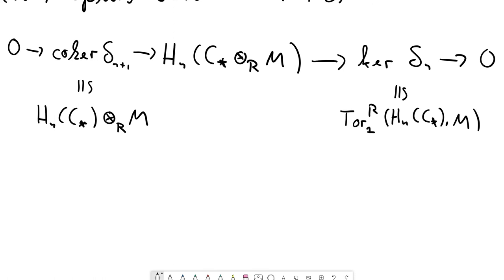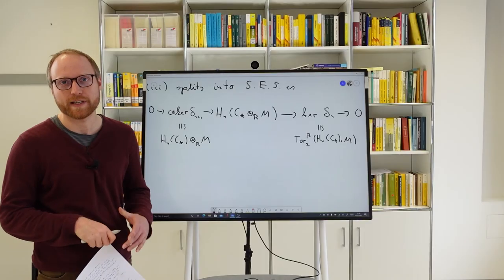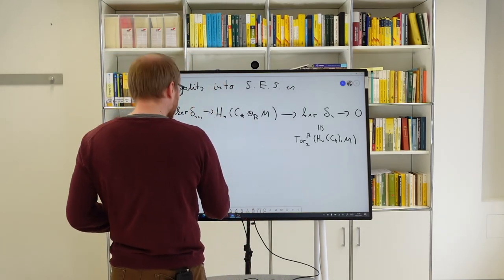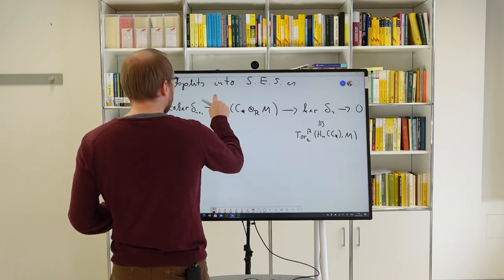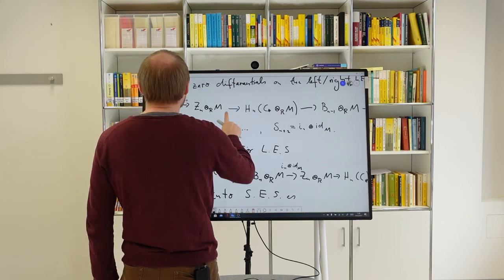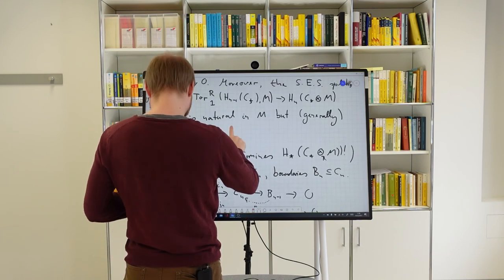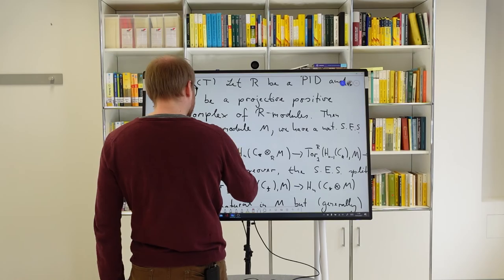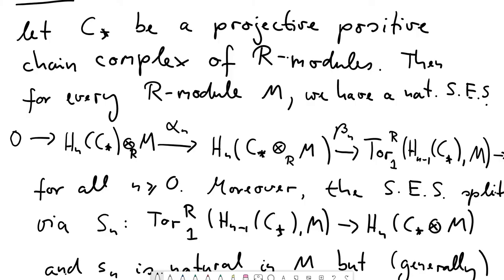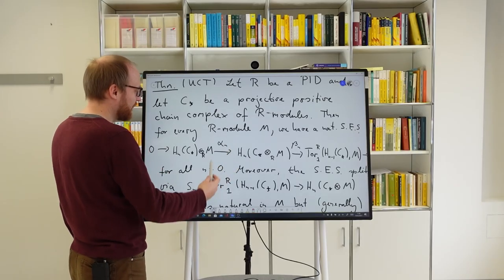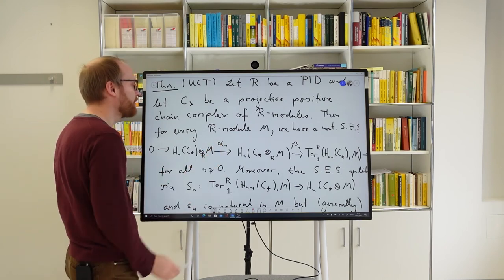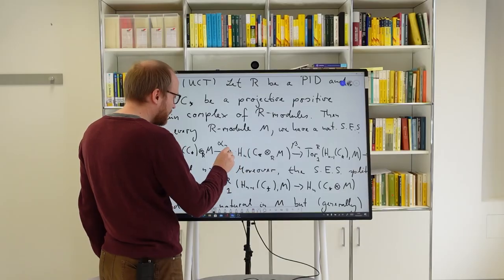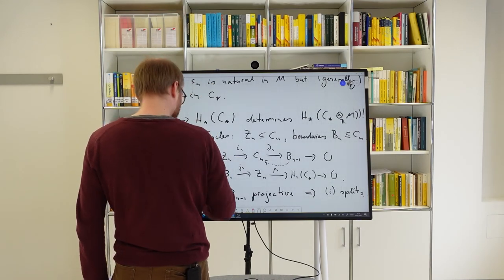This is already the short exact sequence of the Universal Coefficient Theorem. But remember there is a second statement: we still have to discuss the splitting. I can construct a left inverse of the map α_n — a splitting on the Tor side — so that the composition of α_n followed by this inverse gives the identity.